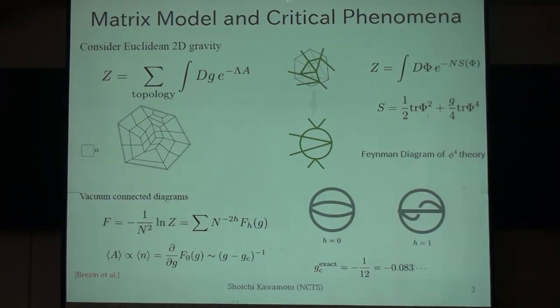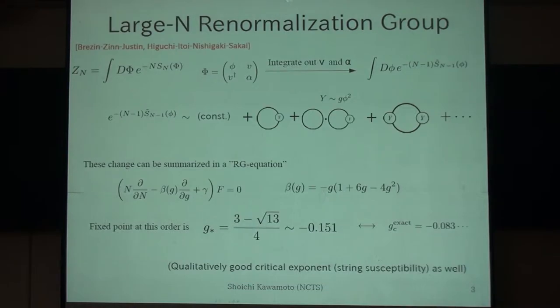But what if we don't know how to calculate the partition functions exactly? Brezin and Zinn-Justin then proposed this kind of procedure. So for the partition function, we first decompose this original matrix into this form. This small phi is n minus one by n minus one, a bit smaller matrix, and some vectors and scalars. And integrate over this vector and scalars.